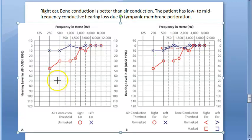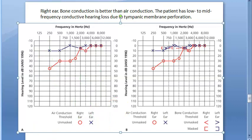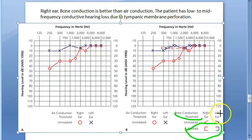If the difference between the two ears is 40 decibels or more in air conduction thresholds, the better ear should be masked to avoid getting a shadow curve from the non-tested better ear. Masking is essential in bone conduction. You can see here that only in bone conduction they have put masking. Masking is done by employing narrow band noise in the non-test ear.